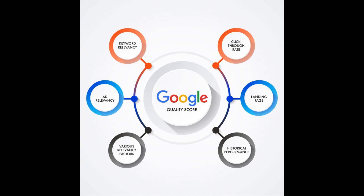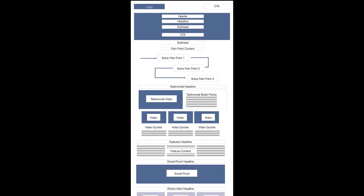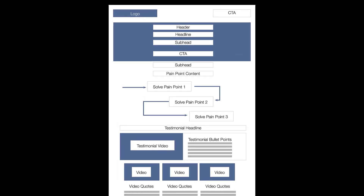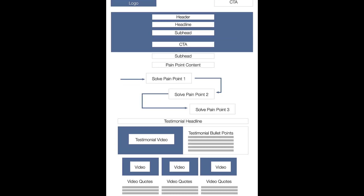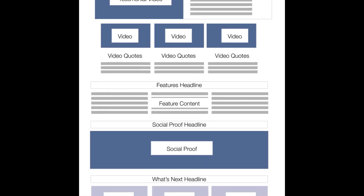Advertising platforms use a similar SEO algorithm to determine your quality score — an arbitrary score given to each page based on how it relates to the keyword. This helps platforms keep irrelevant information off certain searches, but it also allows them to artificially inflate the price of a click. The code structure for this type of page is similar to the SEO structure, with a few major differences.